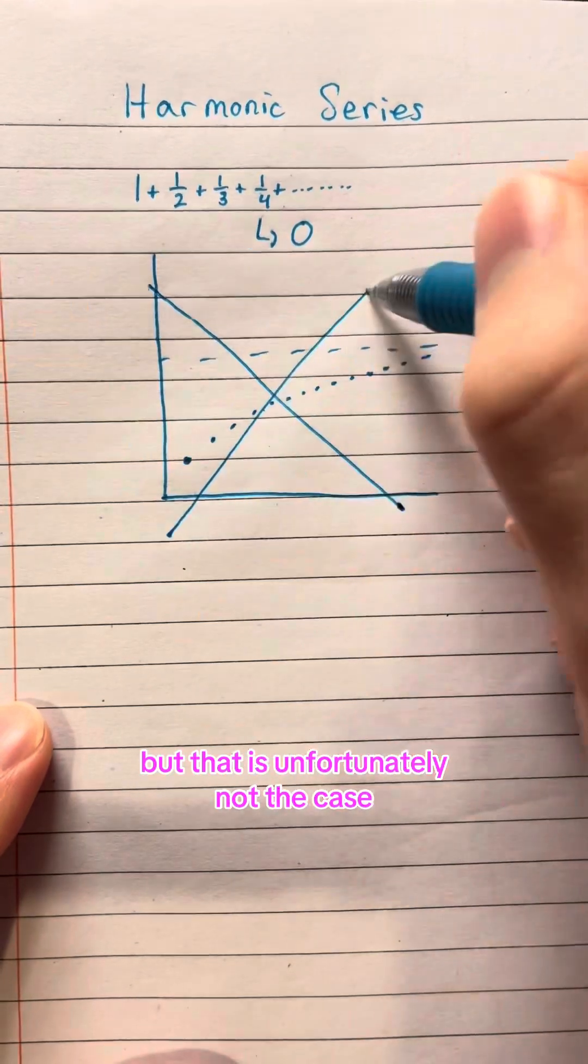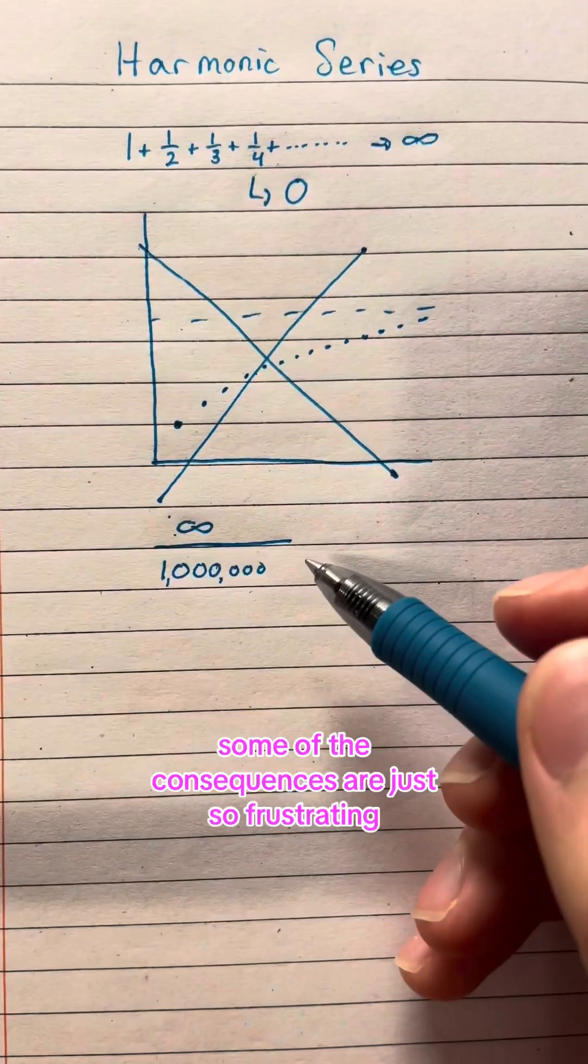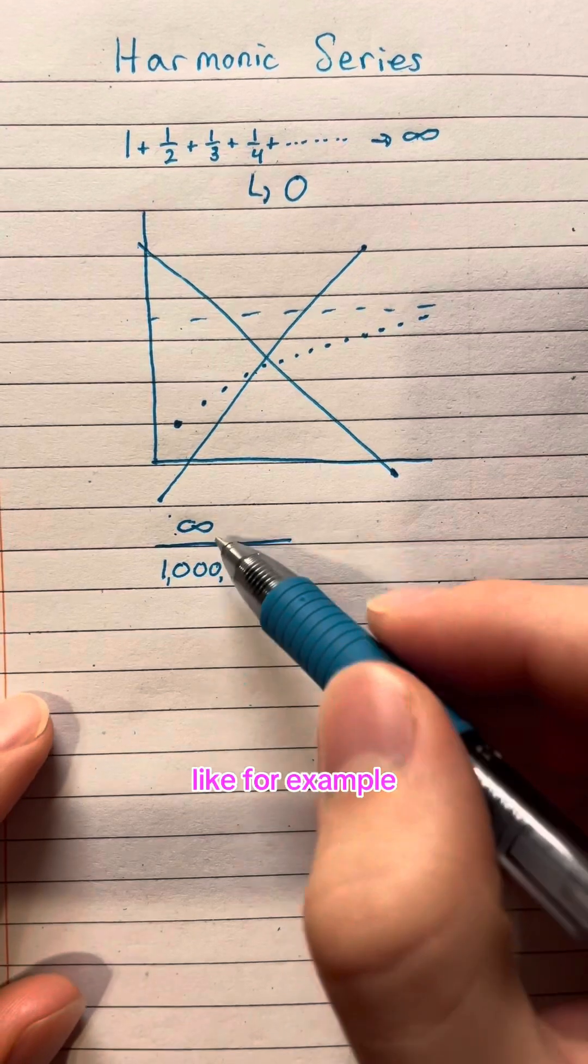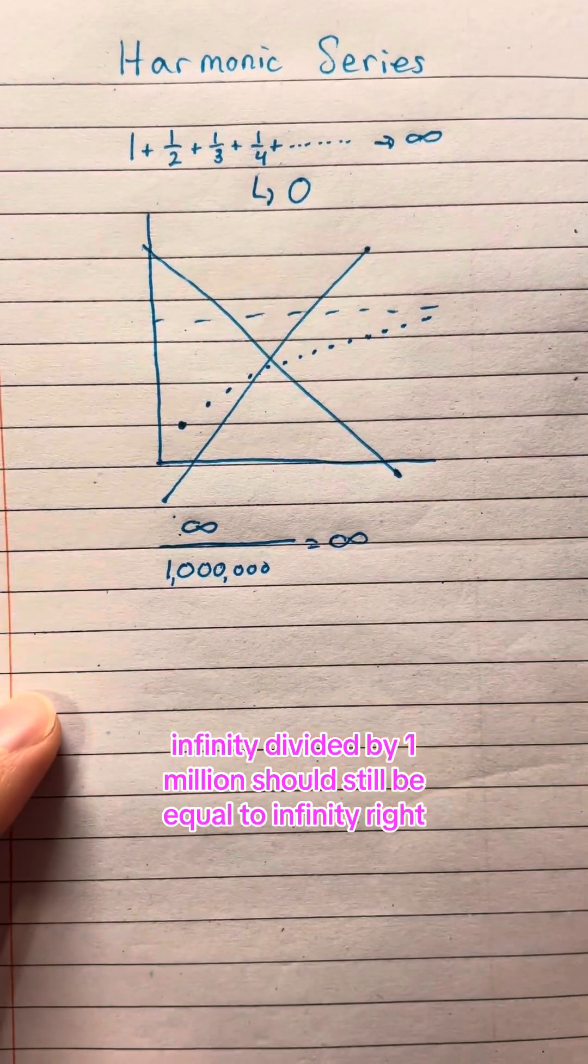But that is unfortunately not the case, and this sum actually approaches infinity. Some of the consequences are just so frustrating. Like, for example, infinity divided by a million should still be equal to infinity, right?